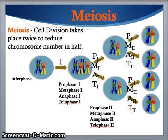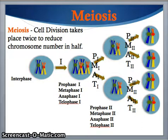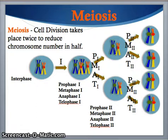Meiosis actually takes place in two mitotic divisions. Just as with any cell cycle, you begin with interphase. After interphase comes prophase 1, metaphase 1, anaphase 1, and telophase 1. There will not be a cytokinesis because the cells are not actually splitting yet. They then return to prophase 2, metaphase 2, anaphase 2, and telophase 2. Then the division of the cells takes place, producing four new gametes with the monoploid number from the original cell.